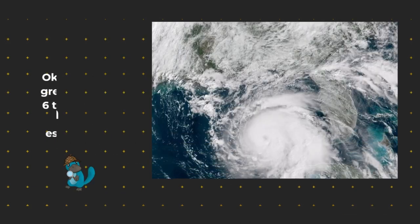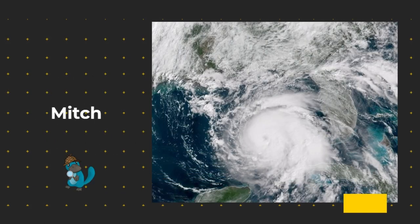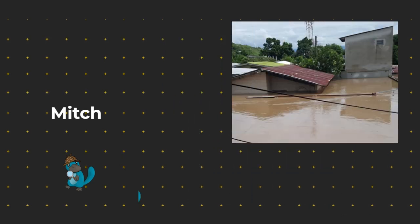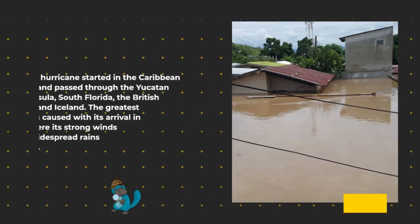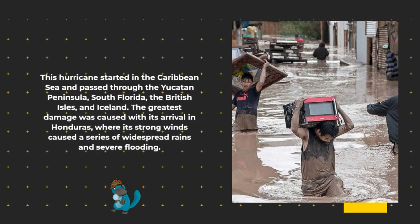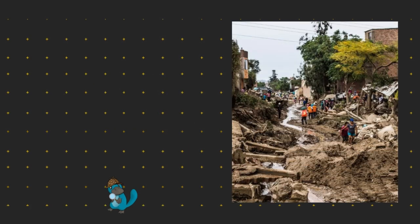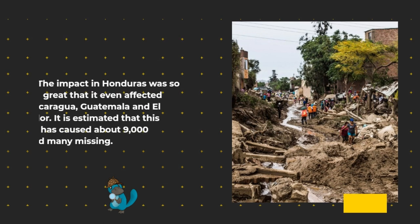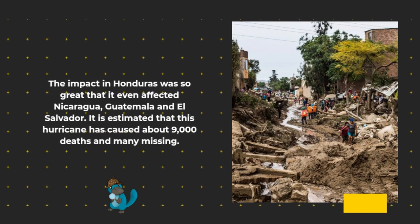Hurricane Mitch started in the Caribbean Sea and passed through the Yucatan Peninsula, South Florida, the British Isles, and Iceland. The greatest damage was caused with its arrival in Honduras, where its strong winds caused widespread rains and severe flooding. The impact was so great that it also affected Nicaragua, Guatemala, and El Salvador. It is estimated that this hurricane caused about 9,000 deaths and many missing.